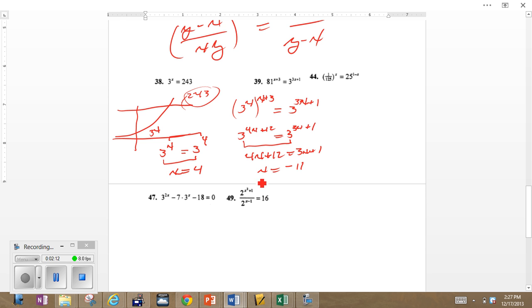Okay so there we have it. Subtract 3x, subtract 12, there we have it. Our value of x is negative 11, which means 81 to the negative 8th power is the same as 3 to the negative 31st power. Let's do the same thing over here.